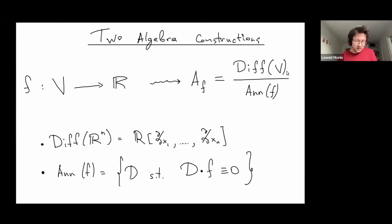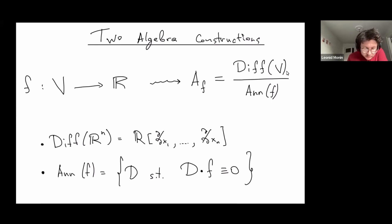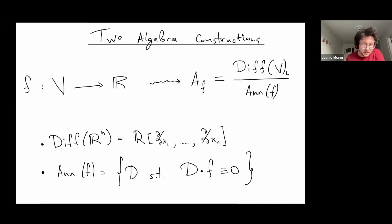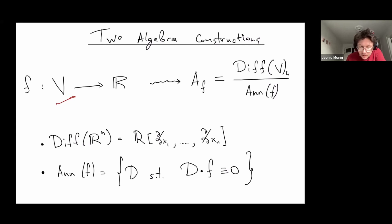I want to describe first two quite abstract constructions in commutative algebra. One is rather classical and another one is a slight variation of this classical construction. So we start with a vector space V. Today I will mostly work with vector spaces and algebras over a field of real numbers, though most things will work over other fields as well. We start with a vector space V and some homogeneous polynomial F on this vector space, and to such a polynomial we can associate an algebra A_F.